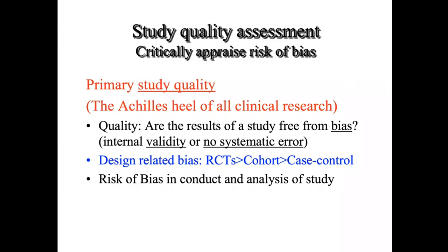The quality has already been addressed inside your research question, because when we talked about study design as an element of the research question, we were already talking about what is the minimum level of quality we would accept to permit studies to enter our systematic review. This is design-related criteria for study selection applied in the second step.